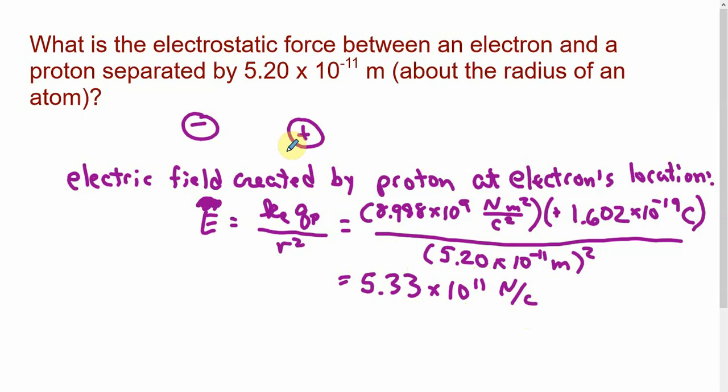Now, remember, that will be pointing, that always points away from the proton. That's going this way. That electric field is there whether the electron is sitting there or not. That's just from the proton. We haven't brought the electron in yet. We just happen to focus on the location where we know the electron is. But if that electron weren't there, that field would still be there.